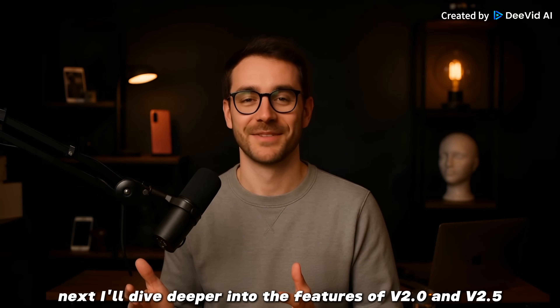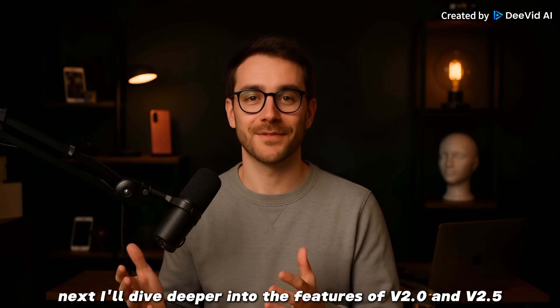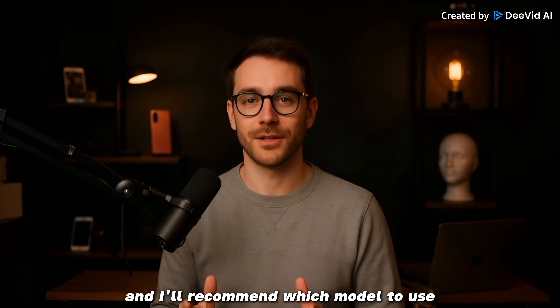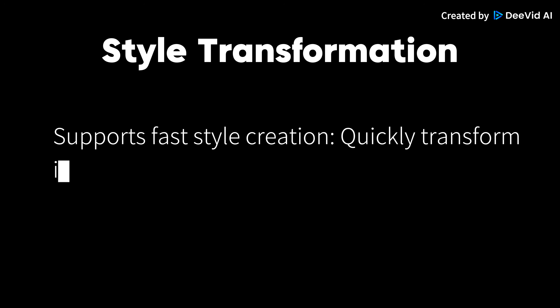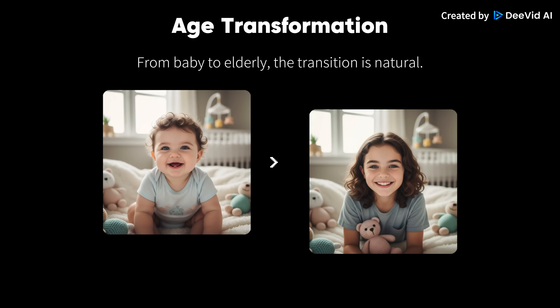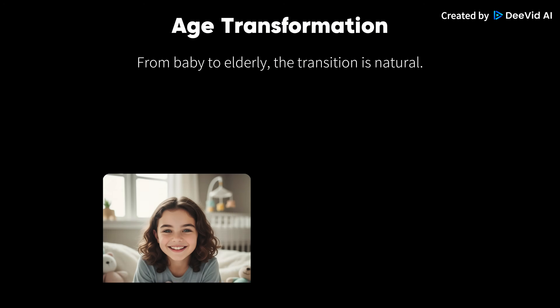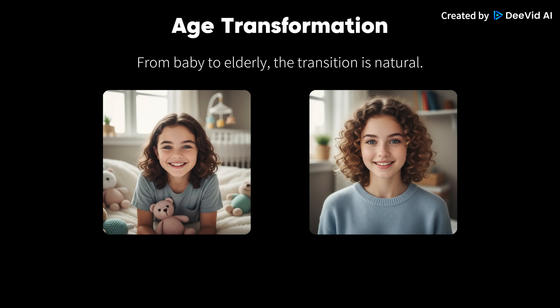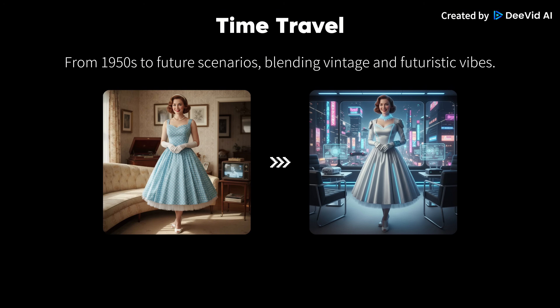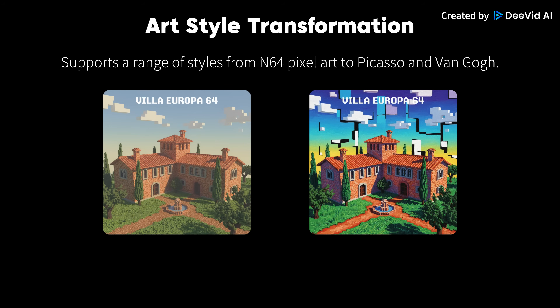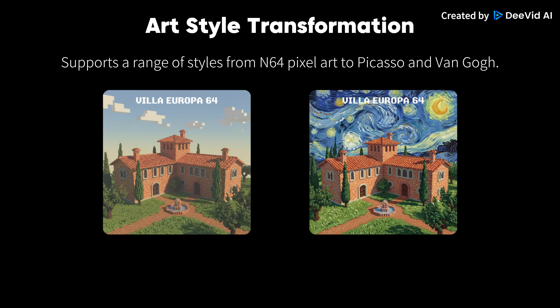I'll dive deeper into the features of V2 and V2.5 and recommend which model to use based on different scenarios. Style transformation supports fast style creation — quickly transform images into different styles. Age transformation: from baby to elderly, the transition is natural. Time travel: from 1950s to future scenarios, blending vintage and futuristic vibes. Art style transformation supports a range of styles from pixel art to Picasso and Van Gogh.